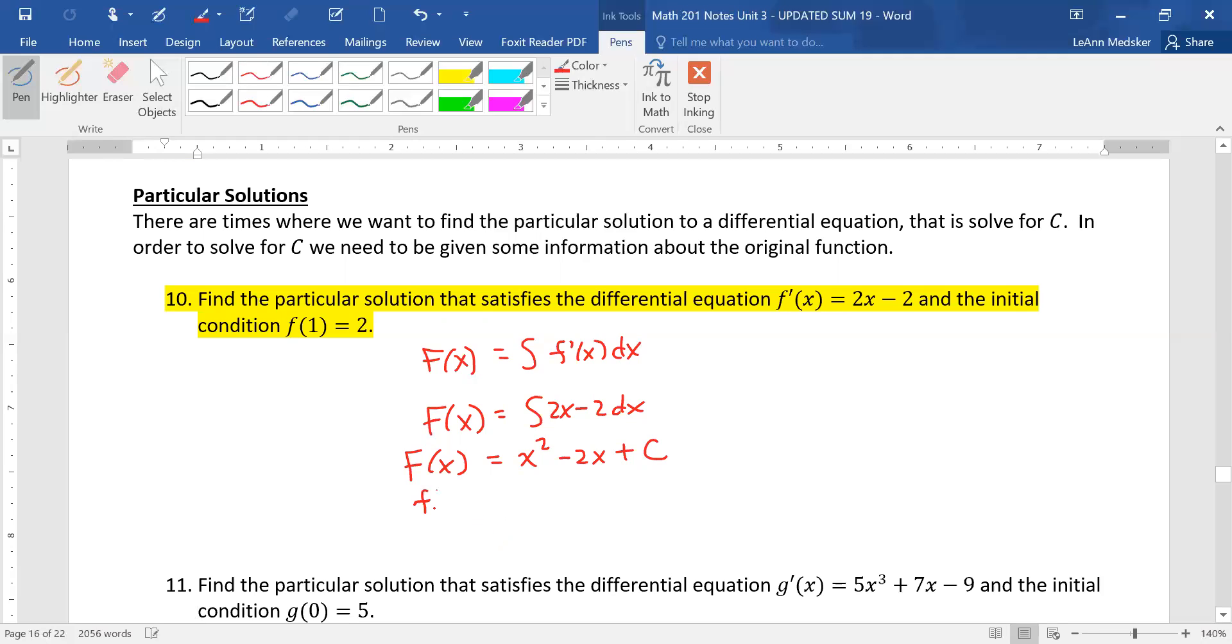We know that f of 1, if we plug in that, f of 1, the actual f of 1 part is a 2. This is a 1 minus 2 plus c. So that is 2 equals negative 1 plus c. So c equals 3. So the particular function that has this derivative and goes through that ordered pair is x squared minus 2x plus 3. And you can even check that by plugging 1 in and making sure that the answer comes out to a 2.